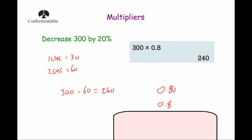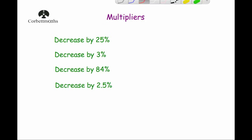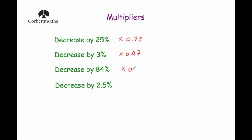Let's look at some multipliers for decreasing by a percentage. Decreasing by 25%: 100% minus 25% is 75%, so the multiplier is 0.75. Decreasing by 3%: 100% minus 3% is 97%, so multiply by 0.97. Decreasing by 84%: 100% minus 84% is 16%, so multiply by 0.16. And decreasing by 2.5%: 100% minus 2.5% is 97.5%, so the multiplier is 0.975.